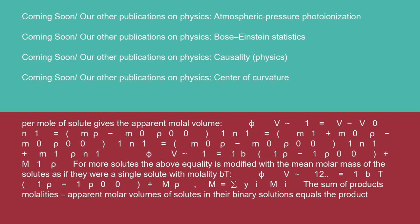This can be expanded as φV₁ = (M₁ + M₀/ρ - M₀/ρ₀)/N₁, further simplifying to φV₁ = (1/B)(1/ρ - 1/ρ₀) + M₁/ρ. For more solutes, the above equality is modified with the mean molar mass of the solutes, as if they were a single solute with total molality Bₜ: φV₁₂ = (1/Bₜ)(1/ρ - 1/ρ₀) + M̄/ρ, where M̄ = Σ yᵢmᵢ, the sum of product molalities.